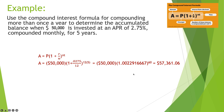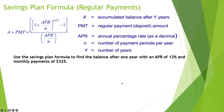Punching it into the calculator: 1 + 0.0275 ÷ 12 ≈ 1.00229167 (repeating sixes). The exponent is 5 × 12 = 60. Multiplying $50,000 by that gives $57,361.06. It seems a little low for compound interest, but the interest rate is only 2.75%.